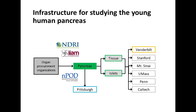Our lab is primarily focused on studying human tissue, so we've developed a robust infrastructure to answer important questions about human biology. We work with organ procurement organizations around the country. When an organ becomes available for research, we ship it to our collaborator in Pittsburgh, where she isolates islets and takes serial sections of the tissue. In that way, we can study both the function of islets and the overall tissue morphology from the same organ, with tissue and islets shipped to Vanderbilt and collaborators around the country.